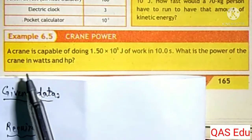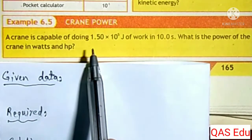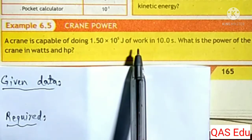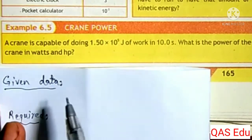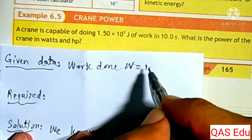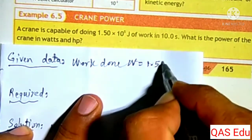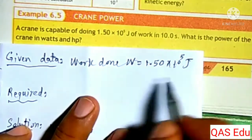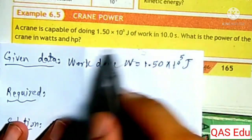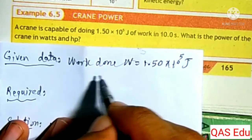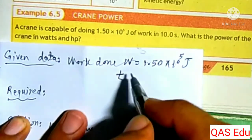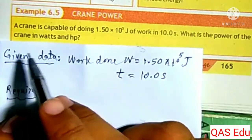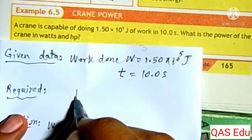Example 6.5: A crane is capable of doing 1.50 times 10 to the power of 5 joules of work in 10 seconds. What is the power of the crane? Required: Power.